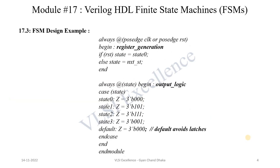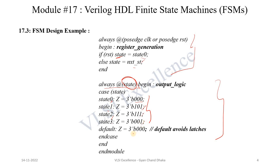The present state logic is coded with a procedural block: always at positive edge clk or positive edge reset. If reset is asserted, present state becomes state 0; else present state becomes next_state. The output logic assigns the 3-bit output Z based on present state: state 0 gives 3'b000, state 1 gives 3'b101, state 2 gives 3'b111, state 3 gives 3'b001, and default gives 3'b000. This completes the Verilog code for the state machine.